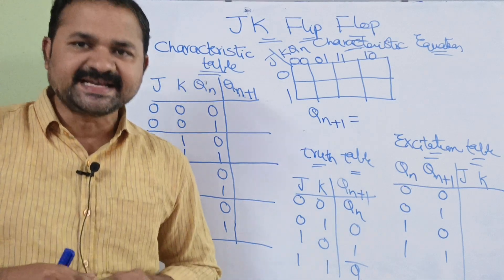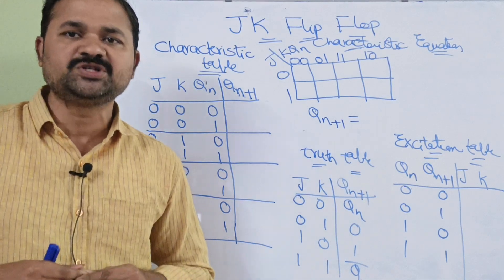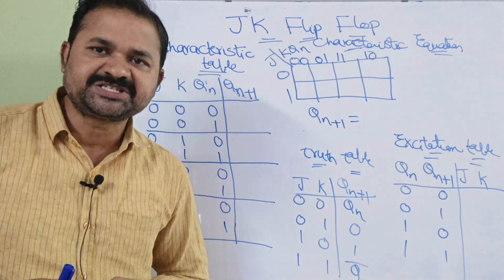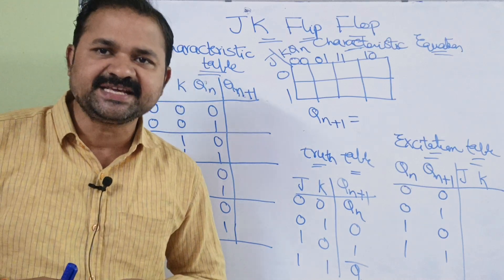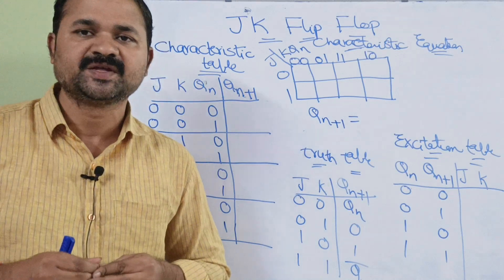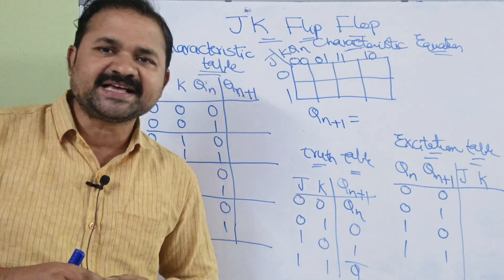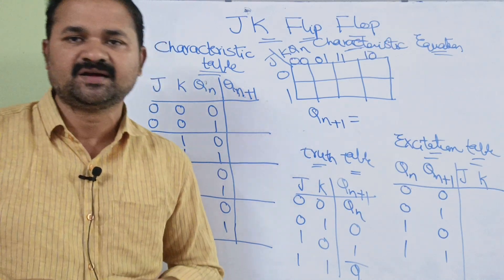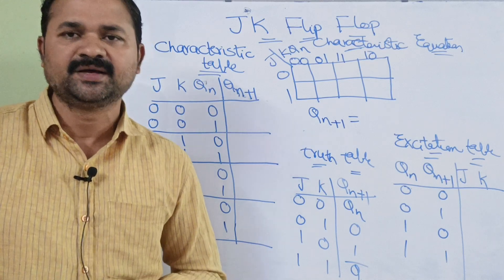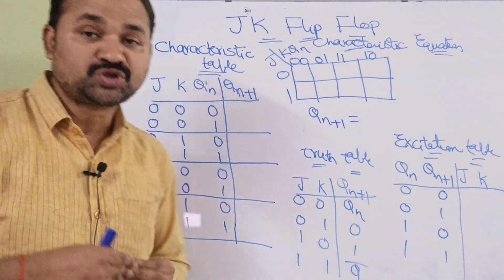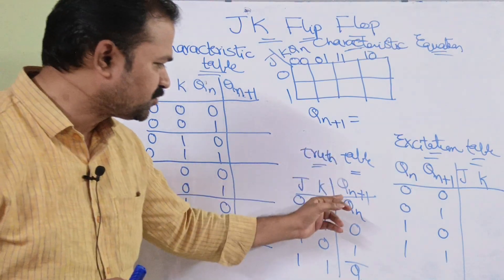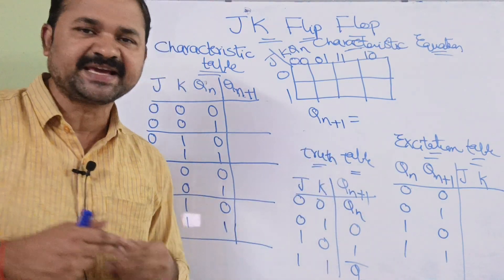Now let us discuss about JK flip-flop: characteristic table, characteristic equation, and excitation table. In the last video we have already seen an explanation about the JK flip-flop as well as the truth table of the JK flip-flop. So this is the truth table of the JK flip-flop.